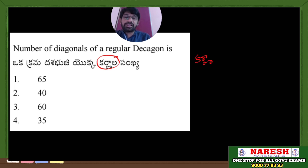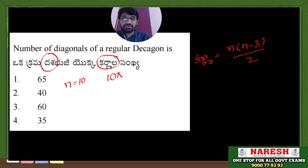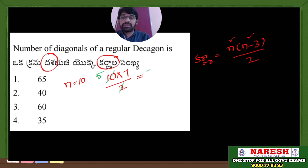Karnal Sankya (number of diagonals) formula: N into (N minus 3) divided by 2. With 10 Buzzi (sides), N is equal to 10. So: 10 into (10 minus 3), which is 10 into 7, divided by 2. That gives 35.